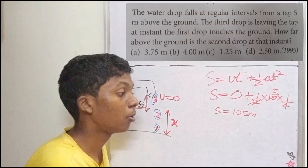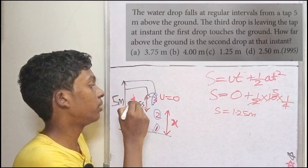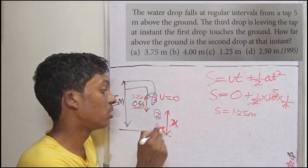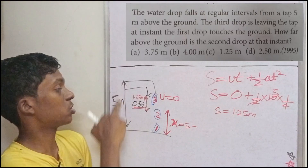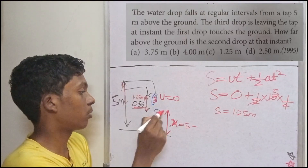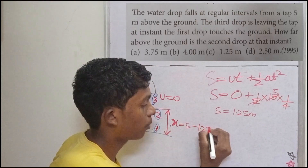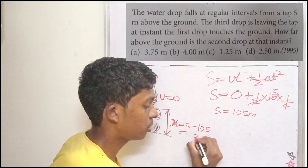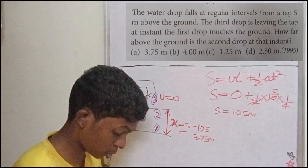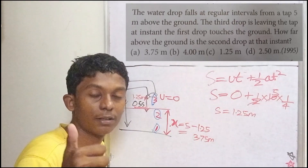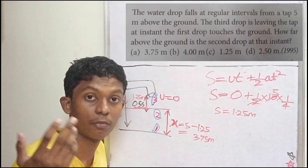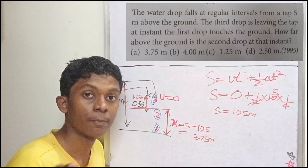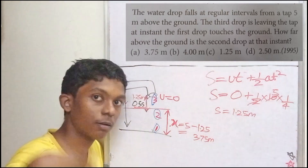The distance fallen by drop 2 is 1.25 meters. So the height above the ground is 5 minus 1.25 equals 3.75 meters. Option A is the right answer. If you like this video, subscribe to our channel, comment what topic or concept in physics, chemistry, or biology you want next, and hit the bell icon.